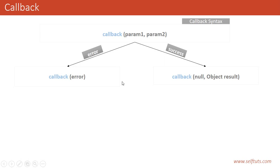The main point of difference is: if you want to throw an error, then you need to set the first parameter. And if you want to return a response, then you need to set the first parameter as null and the second parameter as the response that you want to send.